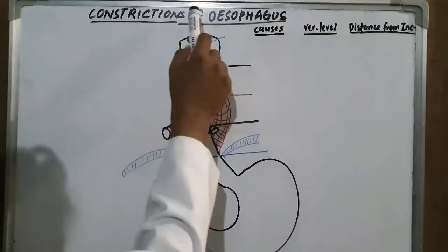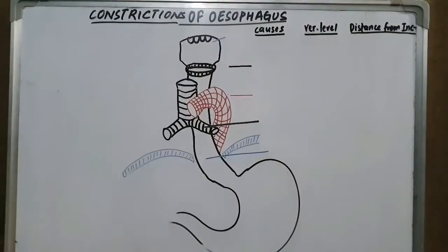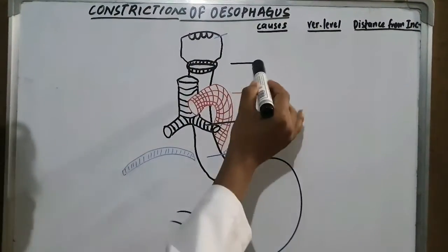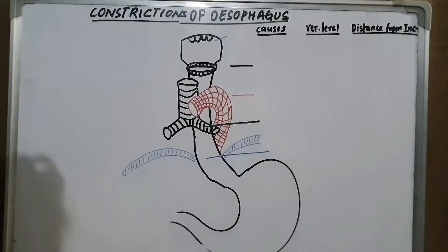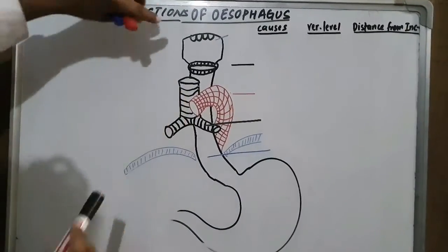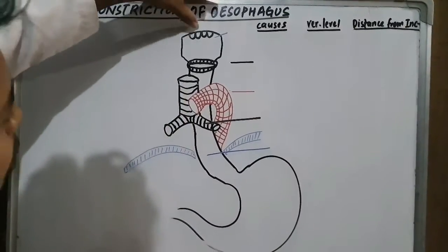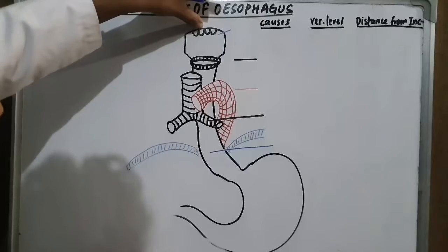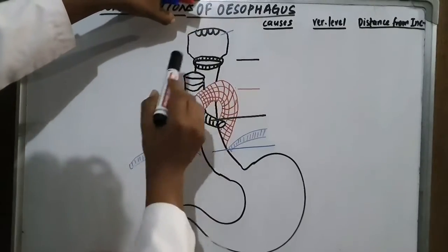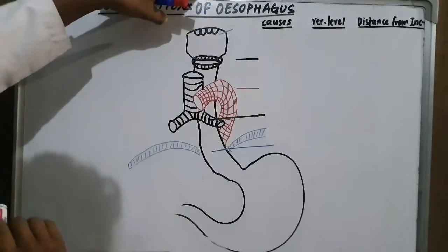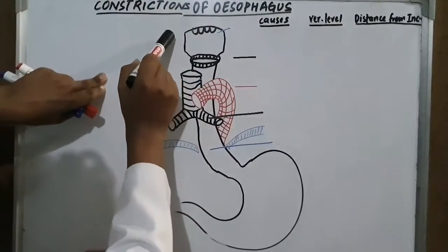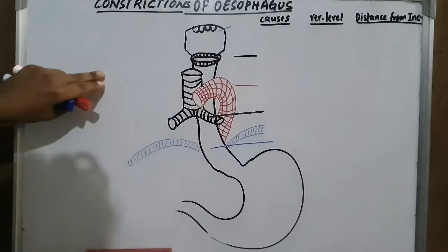Now about the constrictions of the oesophagus — it has four constrictions. The landmark taken is the upper incisor teeth, because they are fixed. The lower incisors are not taken because they are mobile.